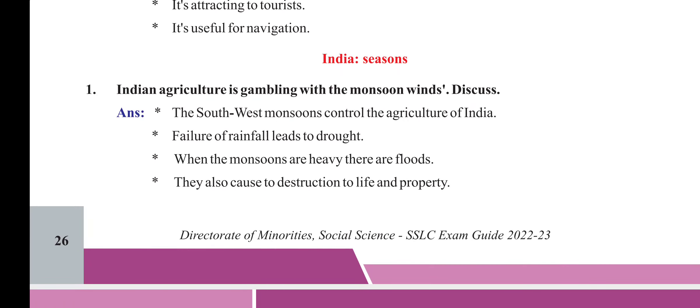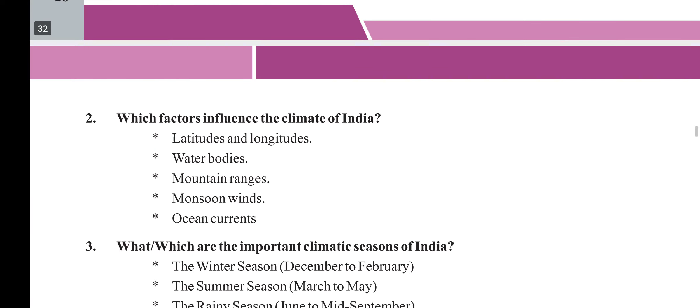India Seasons. Indian agriculture is a gambling with the monsoon winds — discuss. The southwest monsoons control the agriculture of India. Failure of rainfall leads to drought. When the monsoons are heavy, there are floods, which also cause destruction to life and property. Which factors influence the climate of India? Latitudes and longitudes, water bodies, mountain ranges, monsoon winds, and ocean currents.